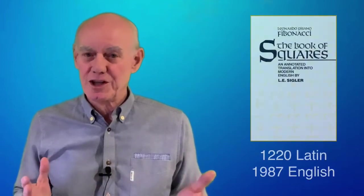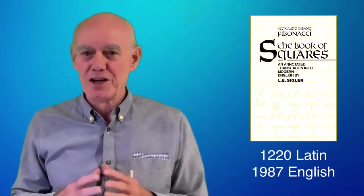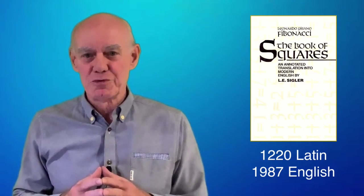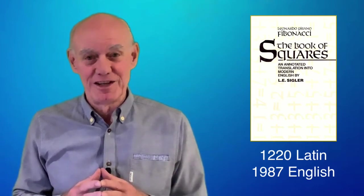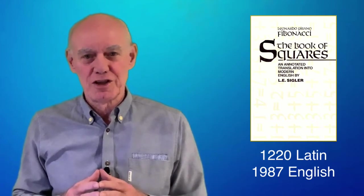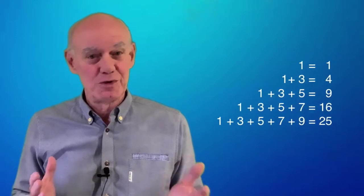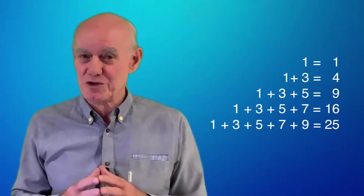Fibonacci's original book was in Latin. I imagine there were lots of translations of it before this one in the year 1987. Notice it doesn't matter if it's a good translation or not. Once we know that he is describing the relationship between the sequence of odd numbers and the sequence of squares, we understand him perfectly.